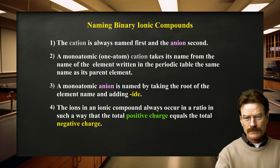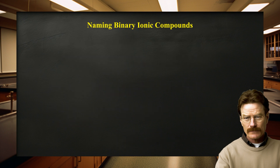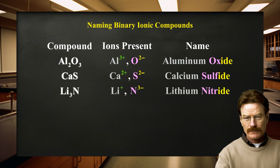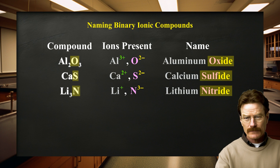The ions in an ionic compound always occur in a ratio such that the total positive charge equals the total negative charge. The compound must be electrically neutral and have a net charge of zero. The rules for naming binary ionic compounds are illustrated in the following examples: Al2O3 is named aluminum oxide, CaS is named calcium sulfide, and Li3N is named lithium nitride. Notice that in each case the cation is named first and the anion second, and the net charge of the compound equals zero.